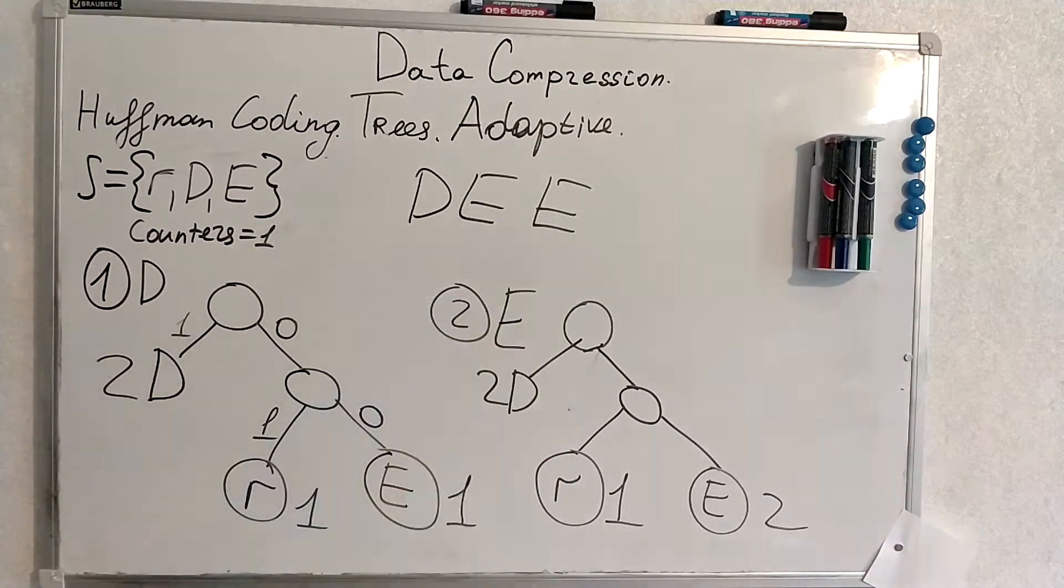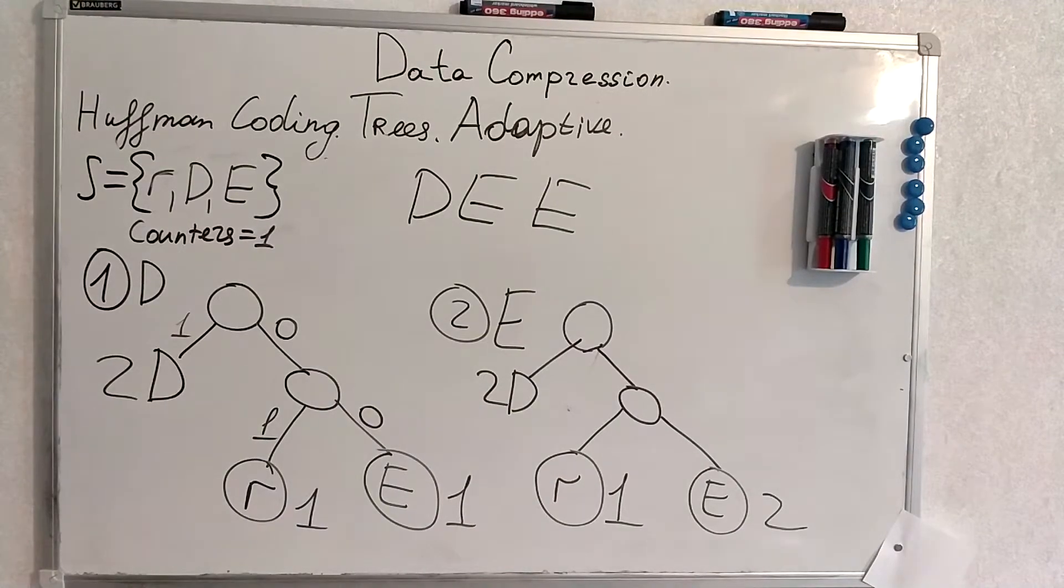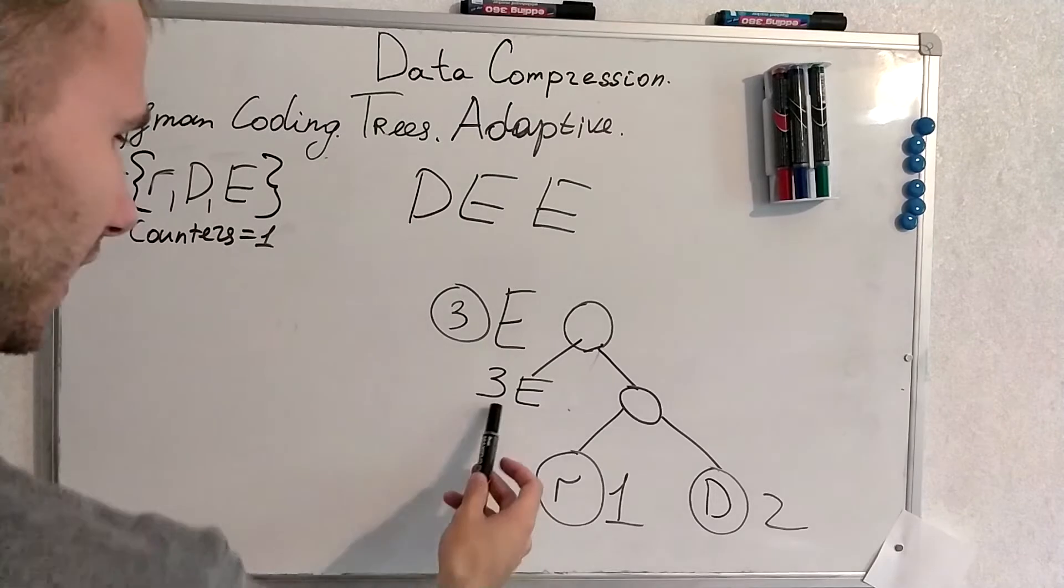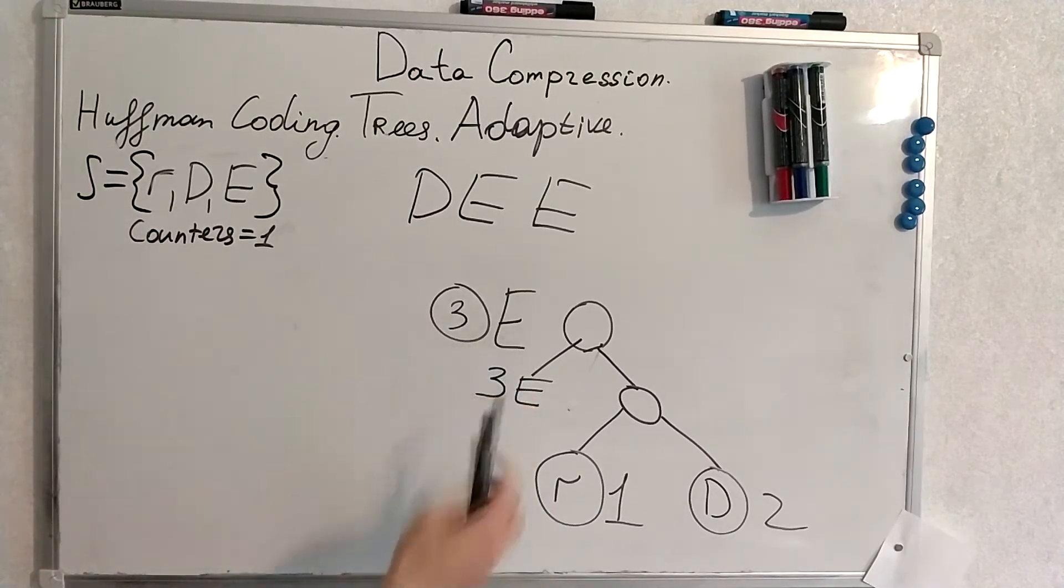But now you see that another E comes and we will change the tree. We have changed the tree because three is the biggest counter. Thus we have faced E a lot of times and the algorithm thinks that the probability of E is big one, right.